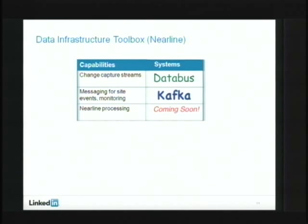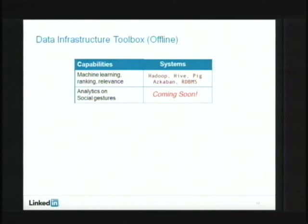The offline ecosystem includes all the machine learning, ranking, relevance, and business intelligence — looking at how features are performing and revenue. There's also analytics and social gestures, some done real-time and some offline. We use Hadoop and Friends mostly for this, and also RDBMS for more complex and reliable requirements.